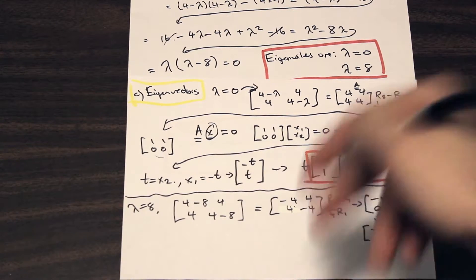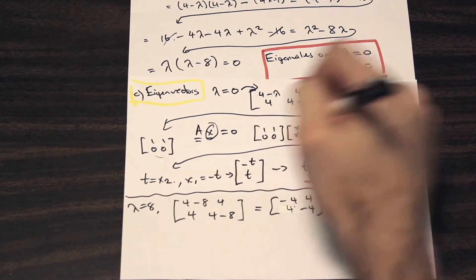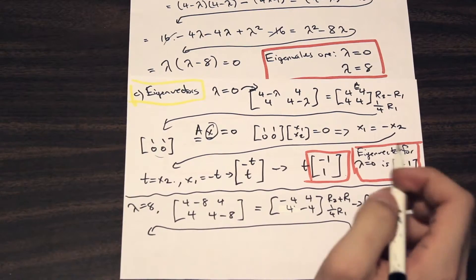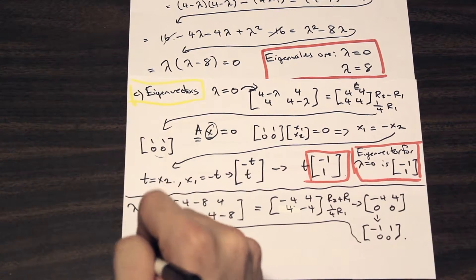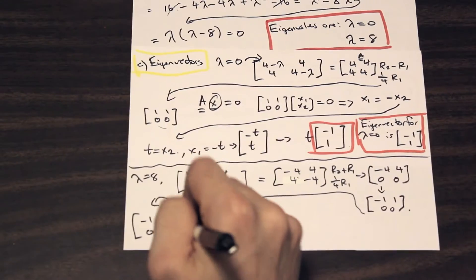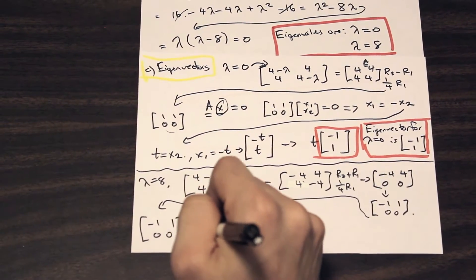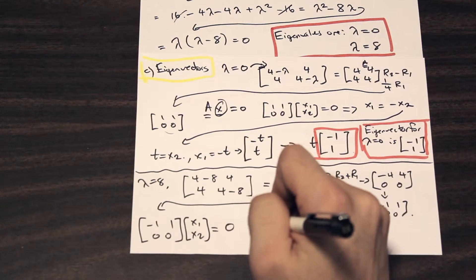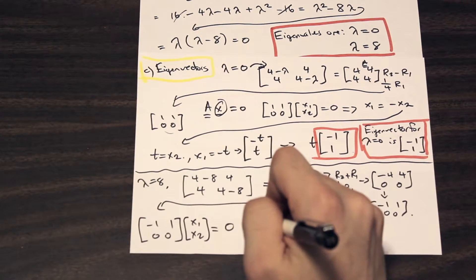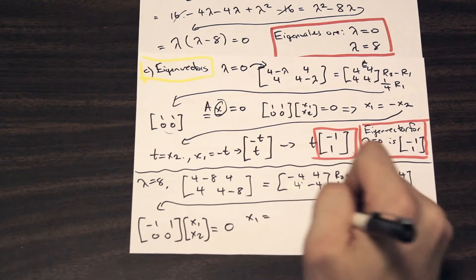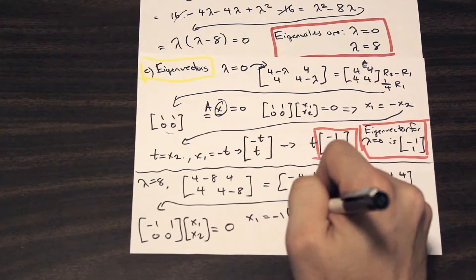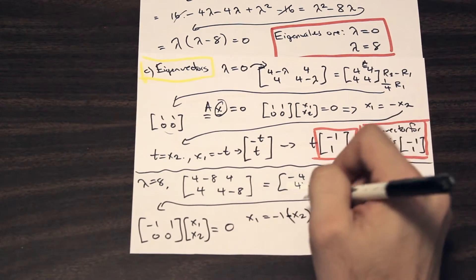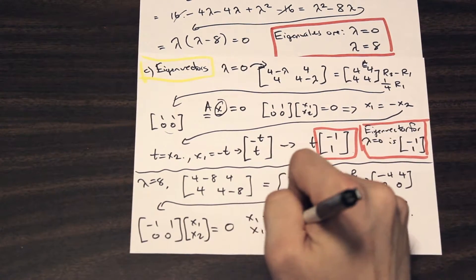And we're going to do exactly the same thing that we did before with the t value here. So let's come over here and finish up this question. So we have negative 1, 1, 0, 0, x1, x2 is equal to 0. So now we can say that we have negative x1 on this side of the equation. So we're going to divide the other side by negative 1. And we have negative x2, we move that to the other side. Well, that's a negative times a negative. So x1 is equal to x2.